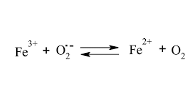The third rule is that as long as iron is carried on a protein, it is in the ferric form and not the ferrous form — with one exception: hemoglobin, which must carry iron in the ferrous form to be able to carry oxygen. The fourth rule is that iron must pass through membranes in the ferrous form.